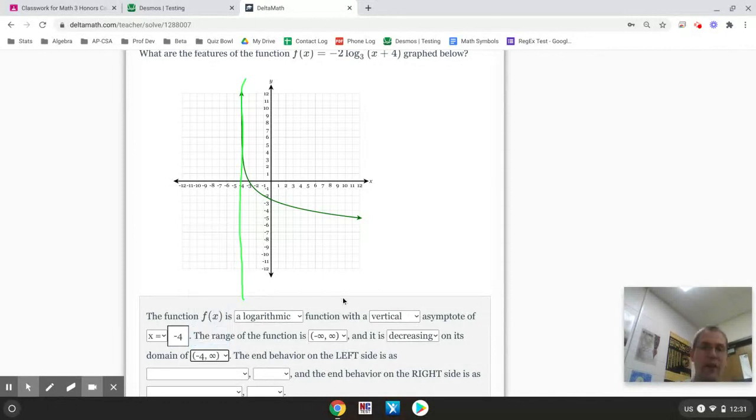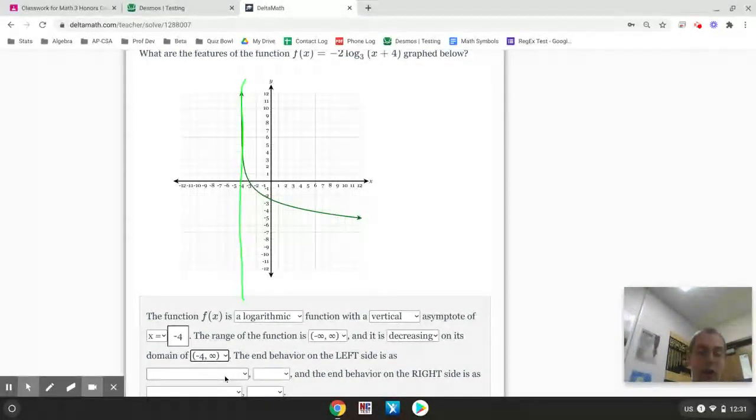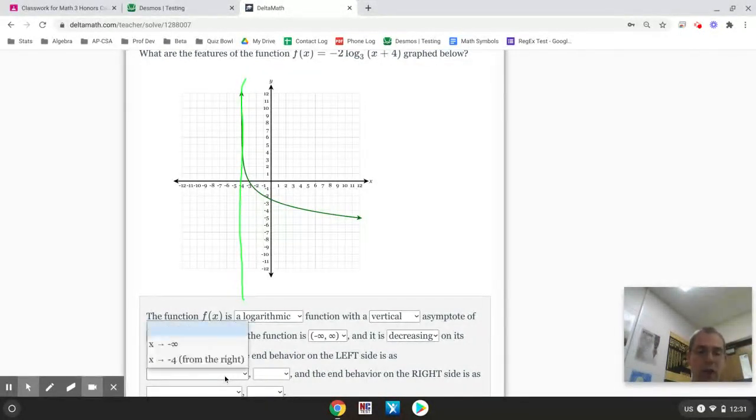And then, the last thing it talks about is end behavior. End behavior is just talking about what the x values do on the two sides of the graph. We've talked about that before with polynomials.